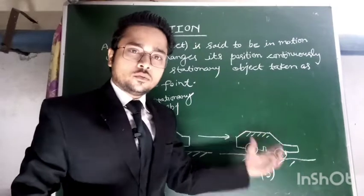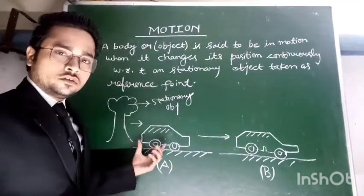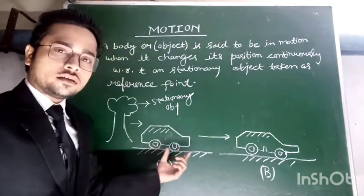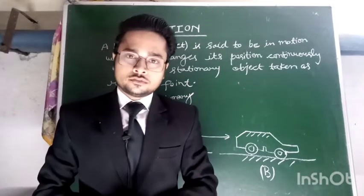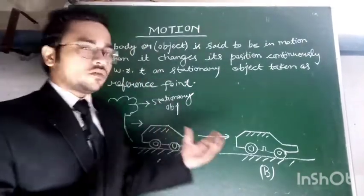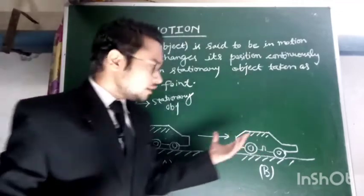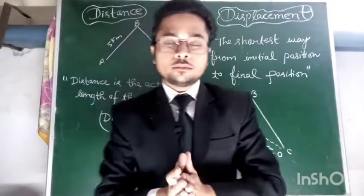The car is now at position B, which is quite far from the initial position. So we can say the car is moving, or the car is in motion. Hence, the definition of motion is complete by this illustration. Now we come to another point: the difference between distance and displacement.